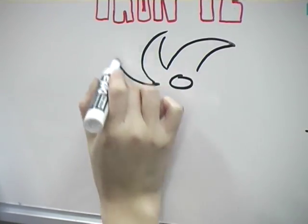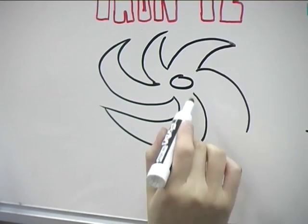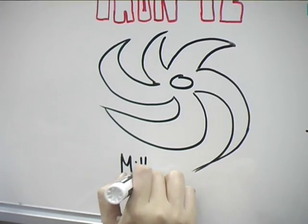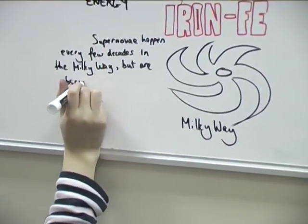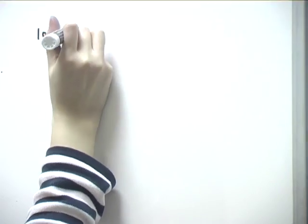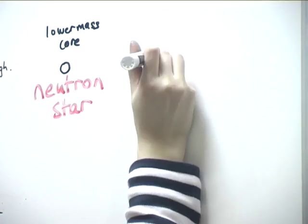Supernovae do occur more often than the recorded dates suggest and actually happen every few decades in our own galaxy, the Milky Way, but we don't see them because they are obscured by dust. The remaining core left over from the supernova can either form a neutron star or, if it's massive enough, can form a black hole.